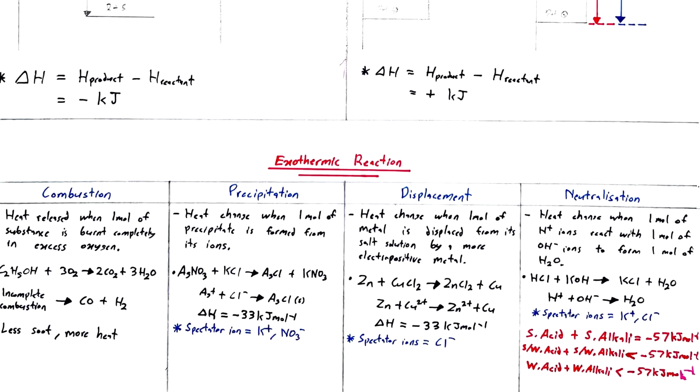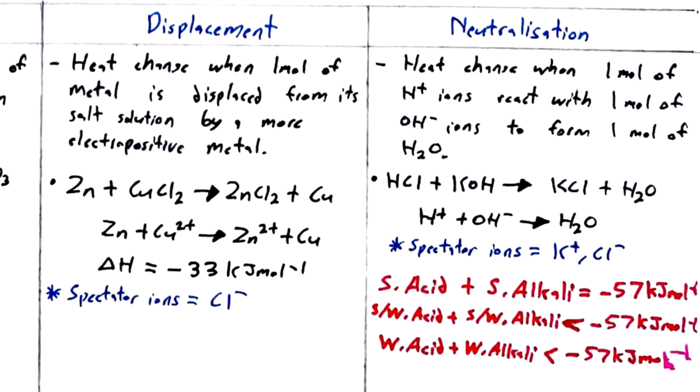Just one thing I want you to remember is that in neutralization, when a strong acid reacts with a strong alkali, the heat will be negative 57 kilojoules per mole. This is the standard that you need to know. If the heat change is less than negative 57 kilojoules per mole, it means that either one of the acids and alkali are weak or both of them are weak. High chance for this question come out in paper 1 so take note of this.